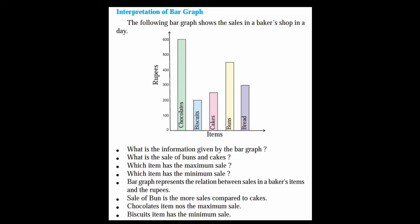Next, the interpretation of a bar graph. The following bar graph shows the sales in a baker's shop in a day — sales in rupees versus items. Let us see the graph. What is the information given by the graph?